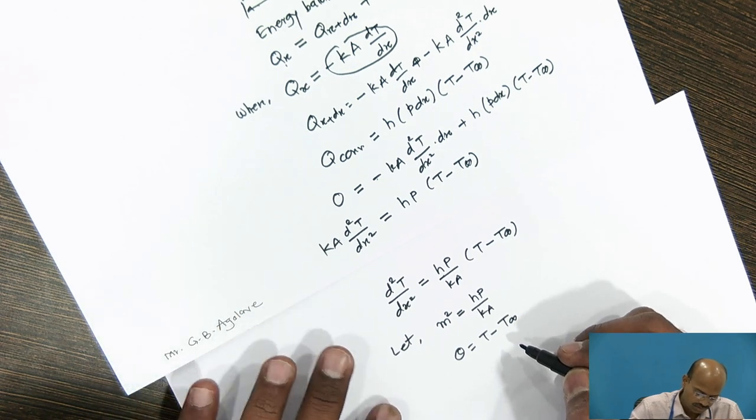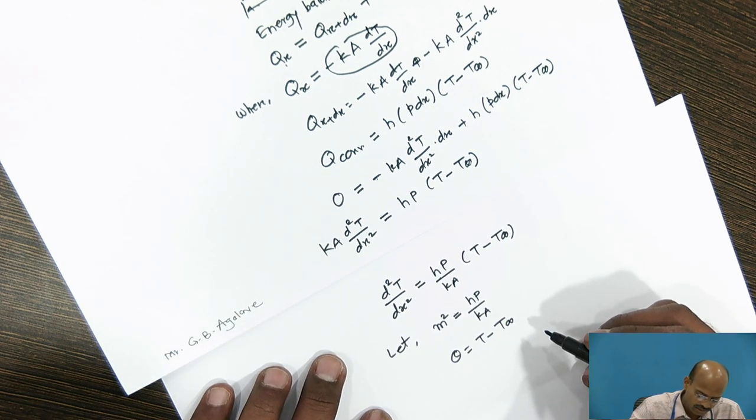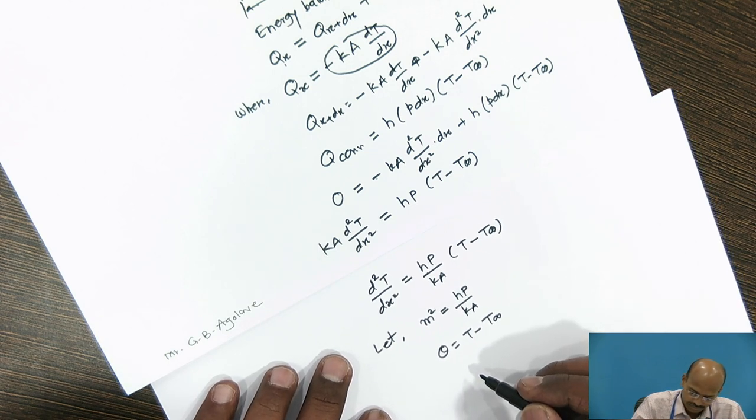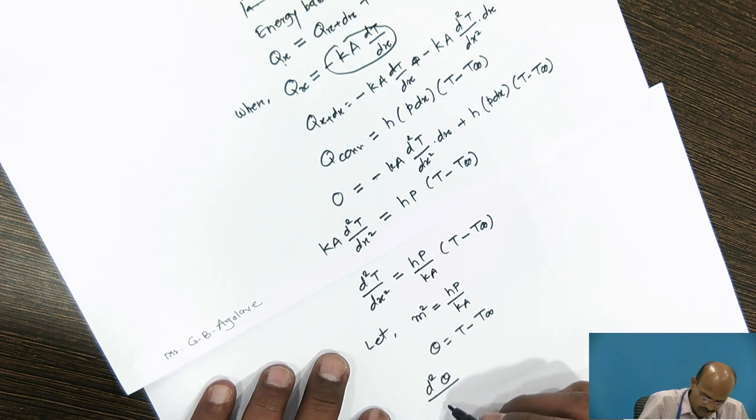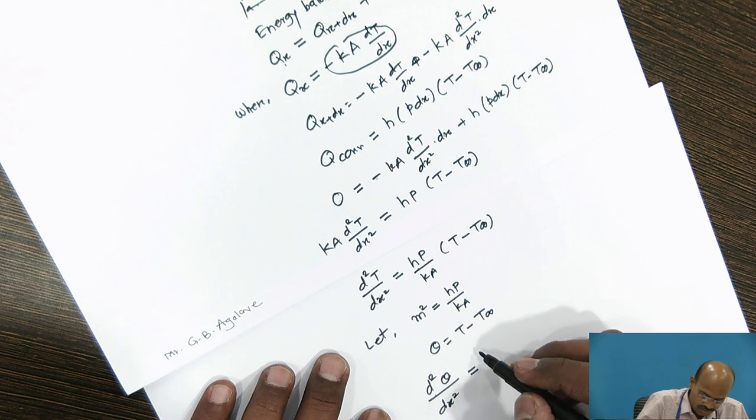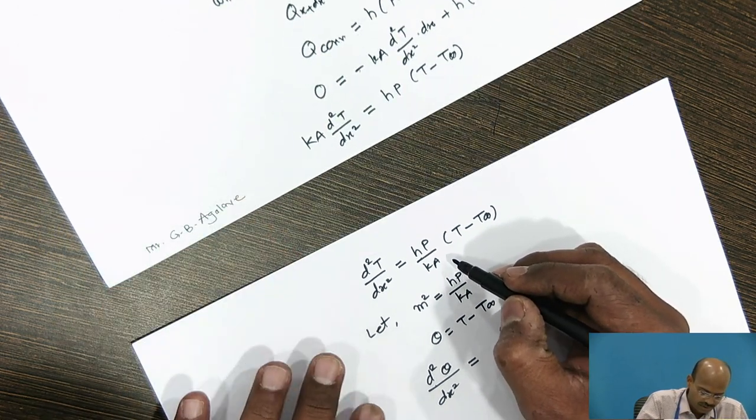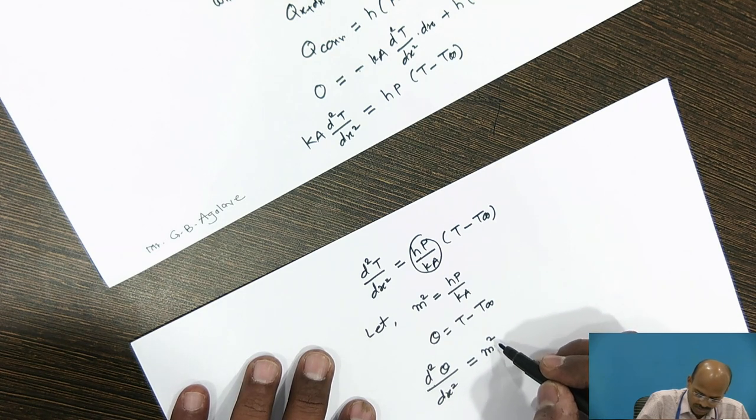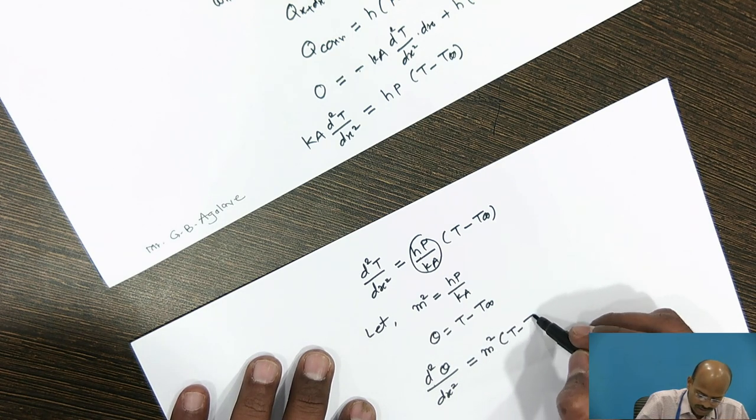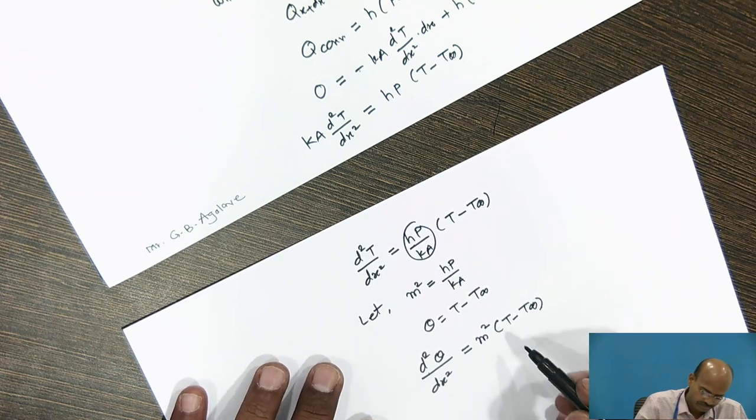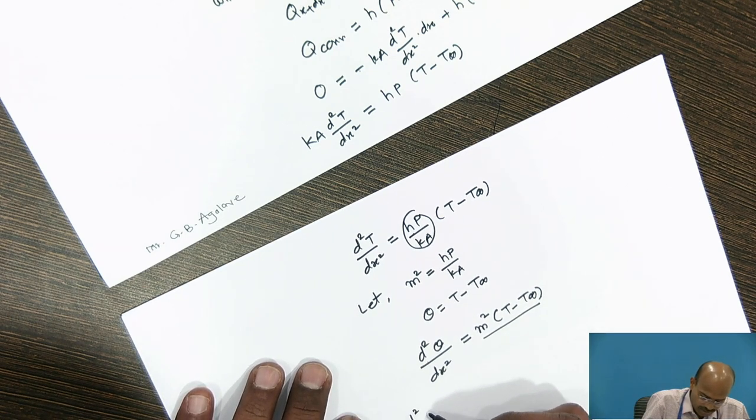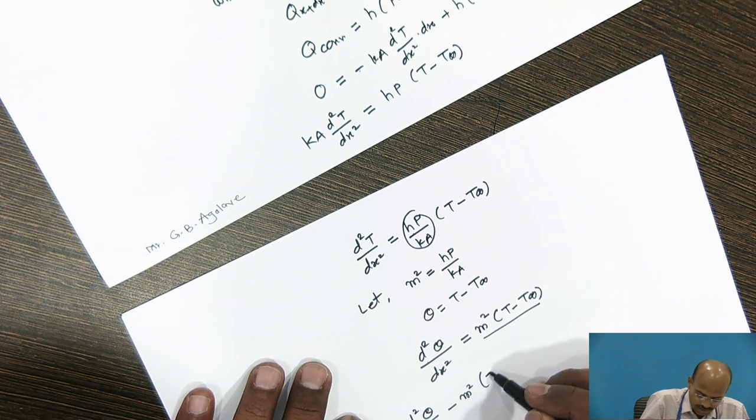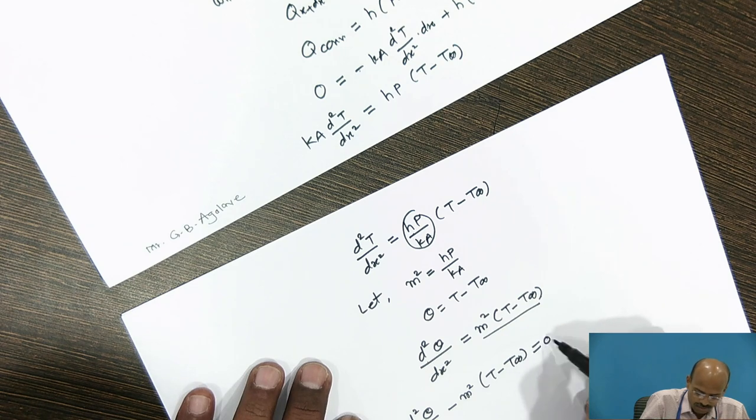I can write the equation d²θ/dx² is equal to instead of hP/kA, I can write m²(T - T∞). If I bring this right hand term to the left side, this becomes d²θ/dx² - m²(T - T∞) = 0.